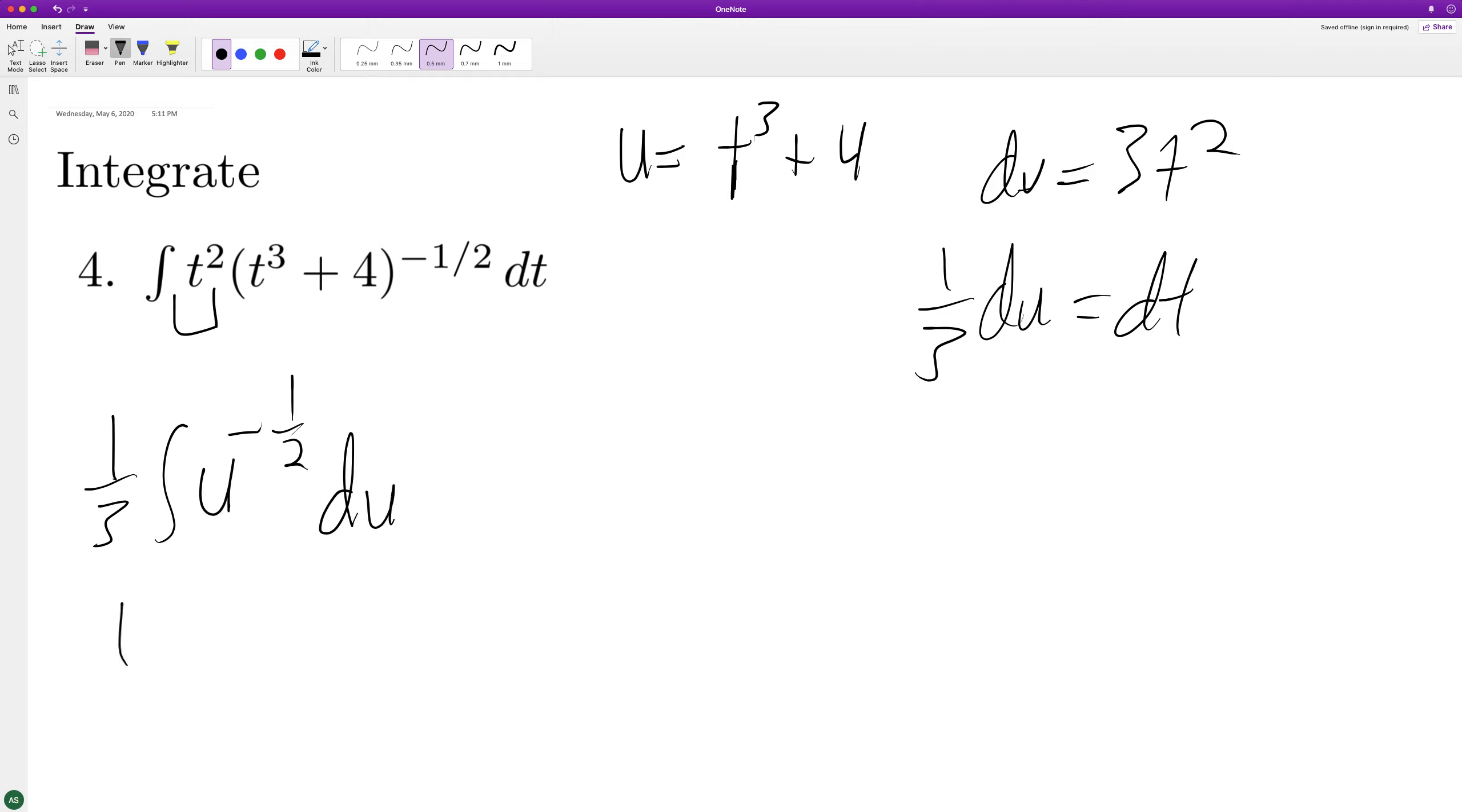So when we integrate this, we get 1 third. You add it. So you get 1 half divided by 1 half. And then we just substitute back in. So divided by 1 half. So this becomes 2 thirds.